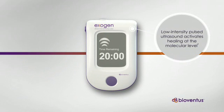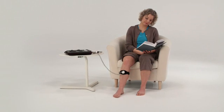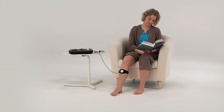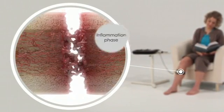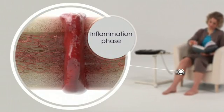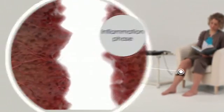To understand how Exogen impacts fracture healing, let's look at the body's natural bone repair process. When a fracture occurs, the body's inflammatory response leads to the migration of cells to the injury site and the formation of new blood vessels.